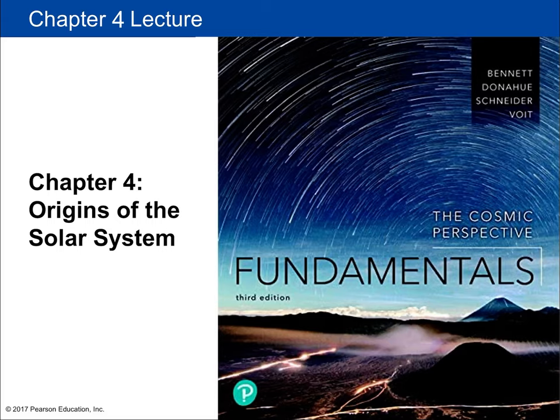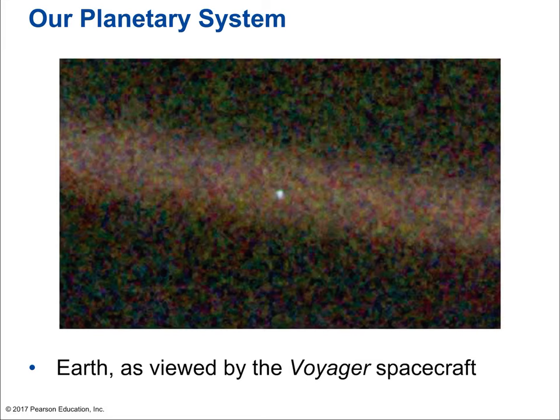Hello, and welcome to the first lecture accompanying Chapter 4. Chapter 4 is on the topic of Origins of the Solar System, for Cosmic Perspective Fundamentals 3rd Edition. In this first video, we're going to focus on a physics review, which is a follow-up from the physics review at the end of Chapter 3. We're going to build on some ideas we've seen before, going into them in a bit more depth, and then get into how the solar system was formed.